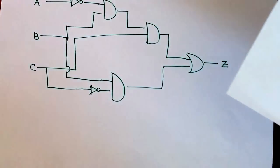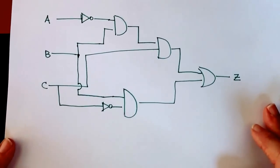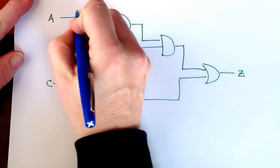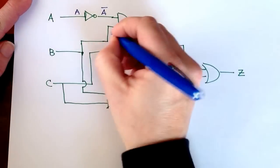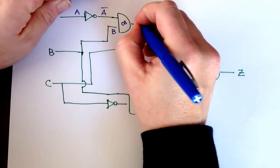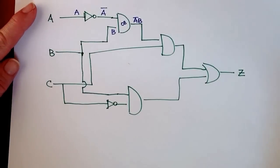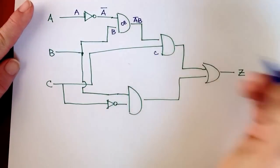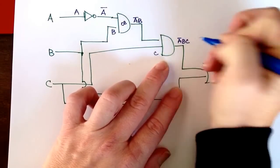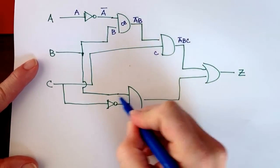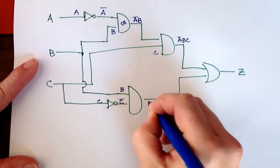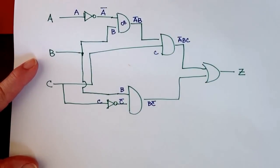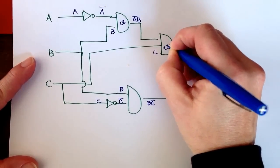Now let's look at another problem. Here we have a three-input circuit. A comes in, here I have NOT A, and this is an AND gate — an 08 — and that's B coming in, so this is NOT A AND B. Then C comes into that, so this one is NOT A AND B AND C. Then tracing the other input: B comes in here, C comes in here, this is NOT C, so this is B AND NOT C. Both of these feed AND gates — 08s.